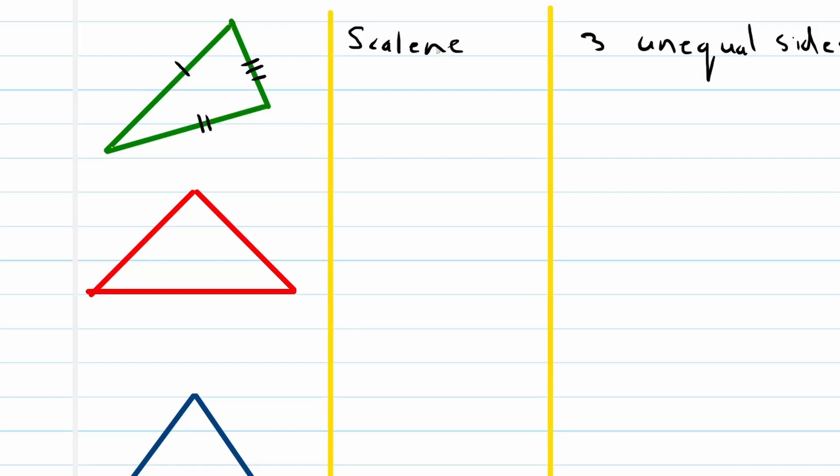Scalene is our very first one - unequal sides. Secondly, we have a triangle we call isosceles. An isosceles triangle is a triangle that has two equal sides, like this red one.